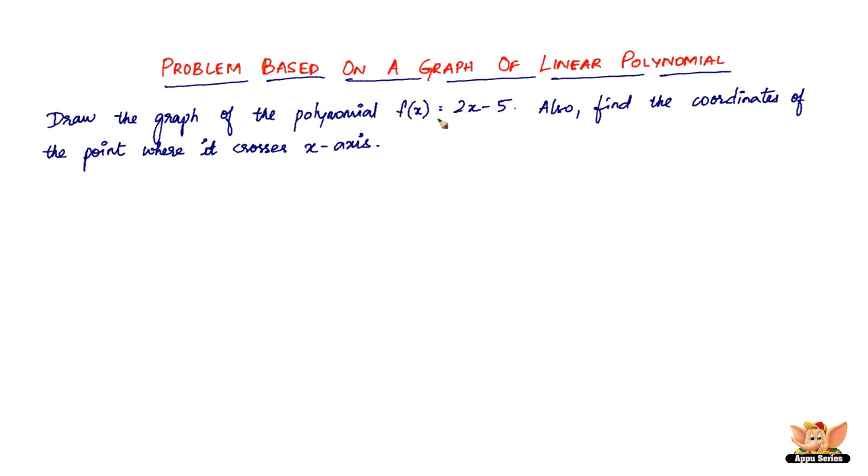So let us quickly find the solutions. Now if you want to draw, you know that the linear polynomial is nothing but a straight line, right? So for a straight line, you just need two points. So let us quickly find out two solutions for this equation. Let's say this is a solution box here.